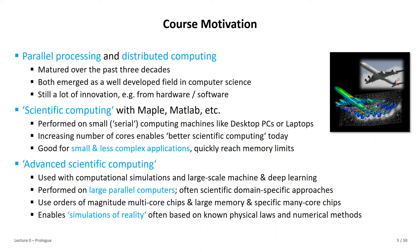On a serial computer you quickly hit memory limits. Getting away from memory limits is one of the motivations for parallel computing — to do advanced scientific computing used for simulations, large-scale machine learning, and deep learning. We use cutting-edge codes and scientific problems with societal relevance, like weather prediction and avalanche prediction. Many of these are simulations of reality based on physical laws and numerical methods, approximating reality as best we can — bridging theory and experiments in practice.